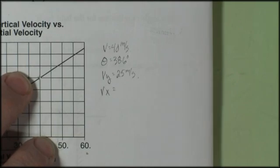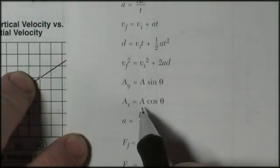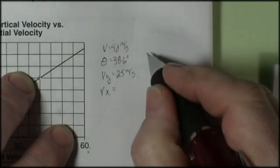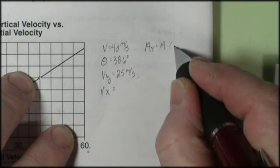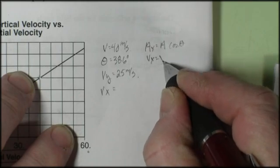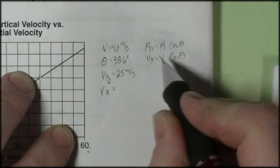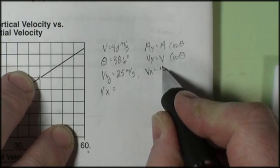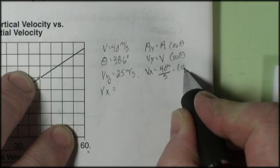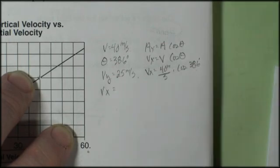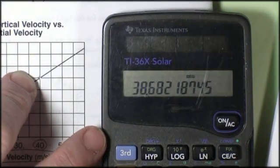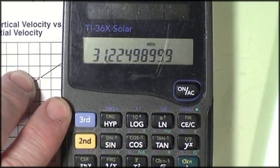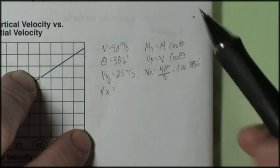Now I want to go find an equation, and I have two I can choose from. I can say velocity x equals velocity cosine theta. This formula tells me any vector's x component is equal to that vector times the cosine of the angle. I can solve for my velocity x by plugging in. Don't forget to plug in with units. That would be 40 meters per second times the cosine of 38.6 degrees. I kept that number on my calculator, so I'm just going to hit the cosine button, multiply it by 40, and I come up with about 31 meters per second. Now I could do it a second way.